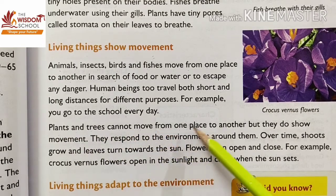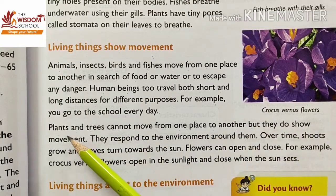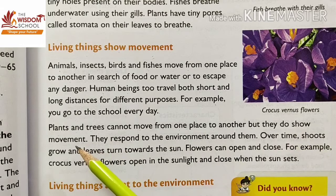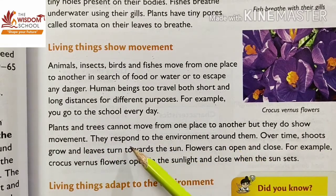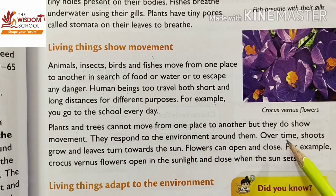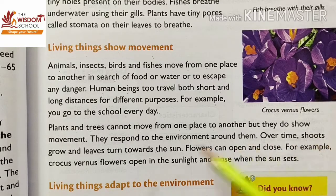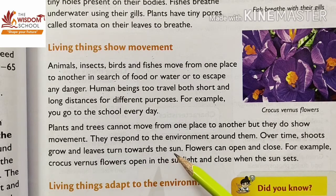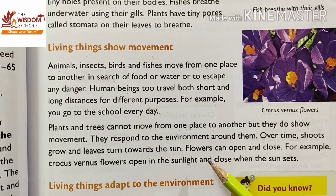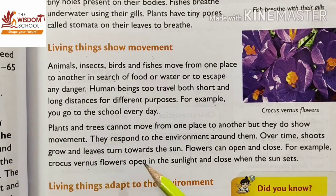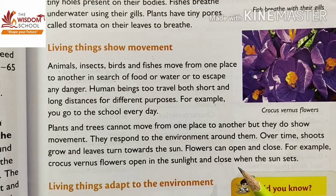Plants and trees cannot move from one place to another, but they do show movement. They respond to the environment around them. Over time, shoots grow and leaves turn towards the sun. Flowers can open and close — for example, crocus flowers open in sunlight and close when the sun sets.